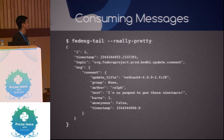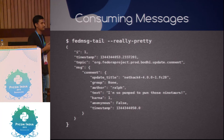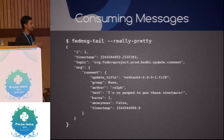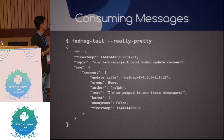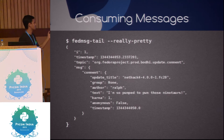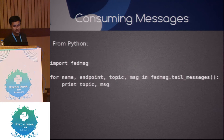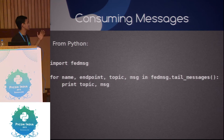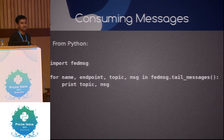If you want to start consuming those messages you're publishing to the FedMessage bus, there's a command called fedmsg-tail with options like --really-pretty and --cowsay. You'll get all messages as JSON showing in your terminal in real time. From Python code, there's a method called fedmsg.tail_messages() which returns a tuple of name, endpoint, topic, and message. You can do things with those variables — after consuming those messages you can perform activities on them and get meaningful data.